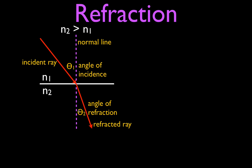The angle is always measured from the normal line to the ray — from the normal line to the ray, not from the boundary. In math class you might put a protractor on a horizontal line and measure the angle from the boundary, but that is not the angle we're talking about. The angle of incidence and the angle of refraction are always measured from the normal line to the ray. Please remember that.